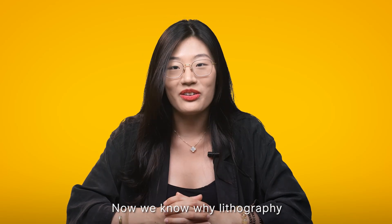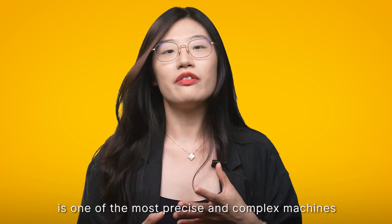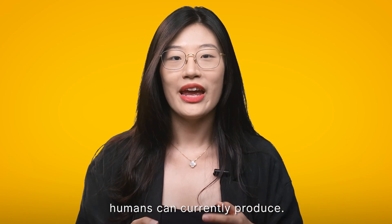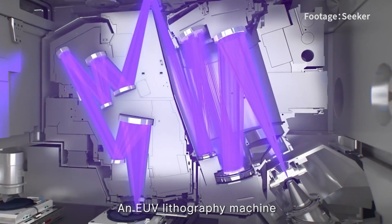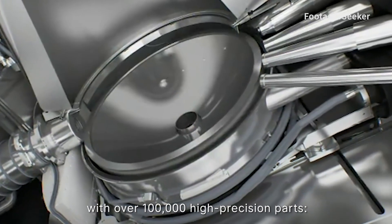Now we know why lithography is so critical for advanced chips. But a lithography machine itself is one of the most precise and complex machines humans can currently produce. An EUV lithography machine has three key components with over 100,000 high precision parts.